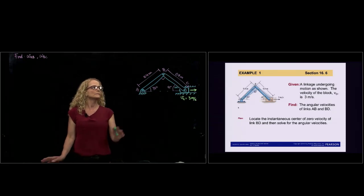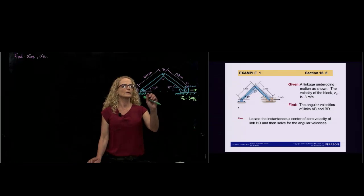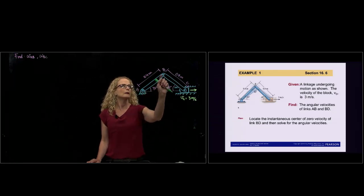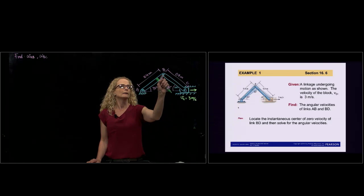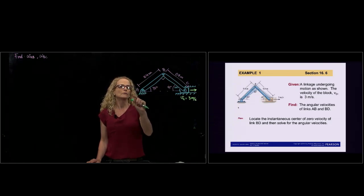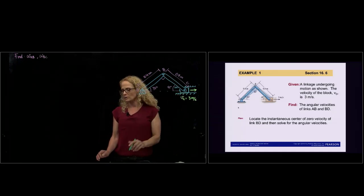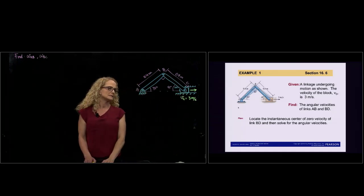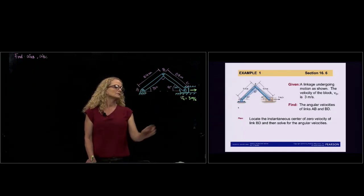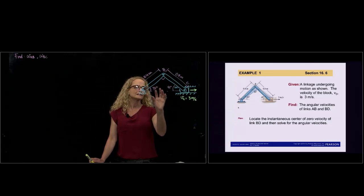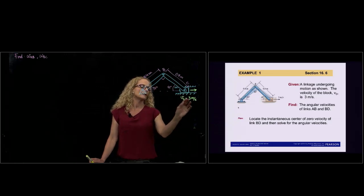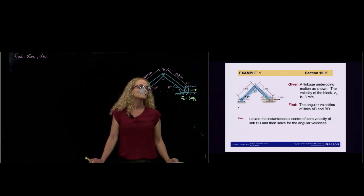We have one problem here that has two rods, rod AB and rod BC, and they are connected by one pin at B. We have one support connected at a pin at A, and then a pin connected to a block at C. Block C is moving at this instant at a velocity of 3 meters per second.